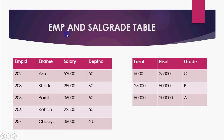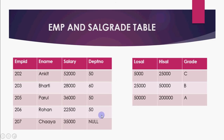Now let's look at a non-equi join. Here we have the employee table again, and a new table called salgrade which stores salary grades. For example, if salary is 5,000 to 25,000, the grade is C; 25,000 to 50,000 is grade B; and 50,000 and above is grade A. So Parul with 36,000 salary would be grade B, and Ankit with 52,000 would be grade A. The employee's salary must fall BETWEEN the low salary and high salary values in the salgrade table to determine the grade.